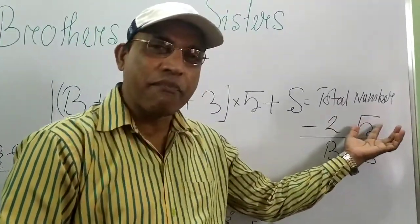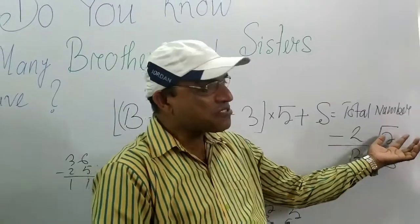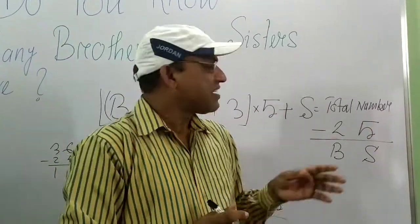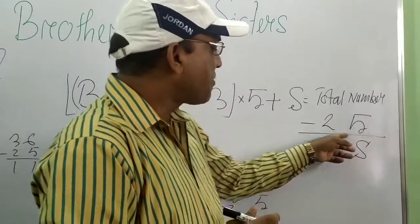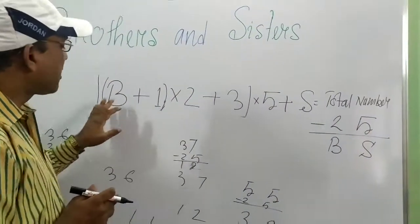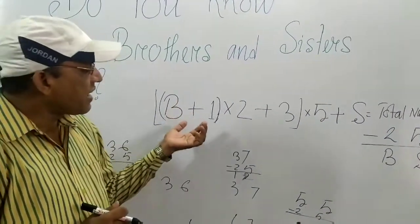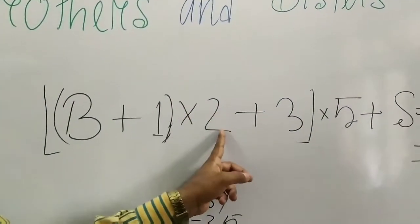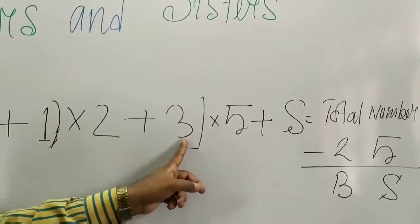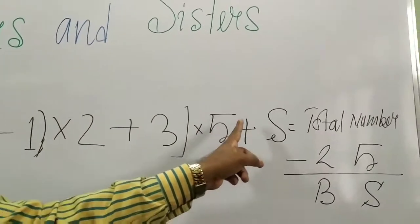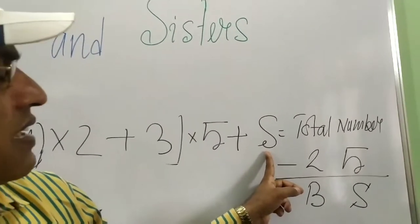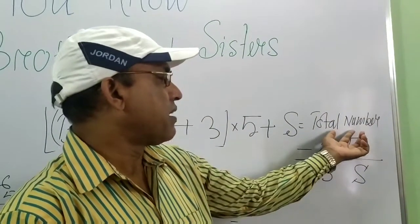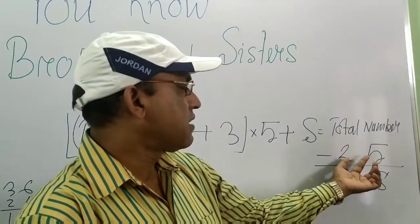You can't say this minus 25 — this is the main magic. If you reveal this 25, then your magic is dismissed. The formula again: brother plus 1 into 2, plus 3, into 5, plus total number of sisters, equals total number. Final number minus 25 gives brother and sister.